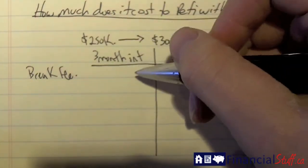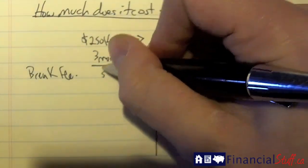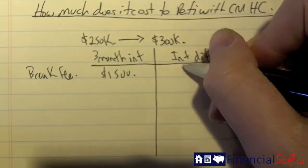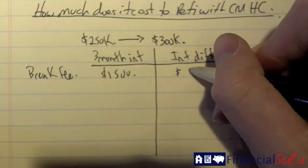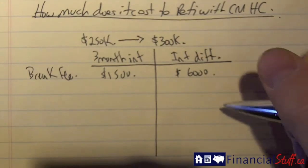For the break fee, the break fee for three months interest on a quarter million might be $1,500. Not too bad. The interest differential fee would be much higher. It could be over $6,000, depends on what the situation is.